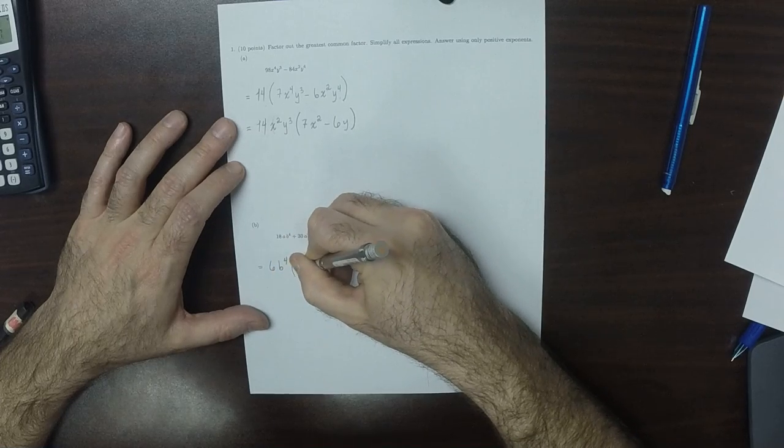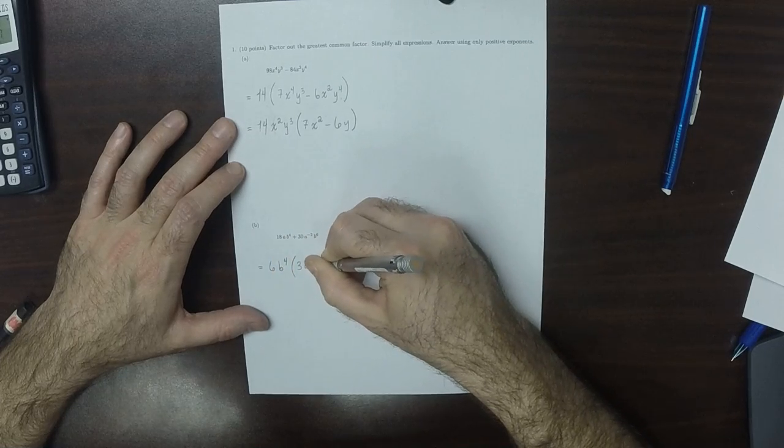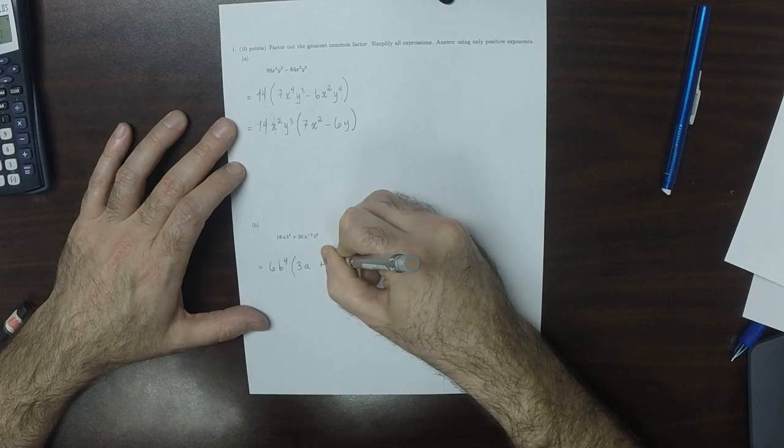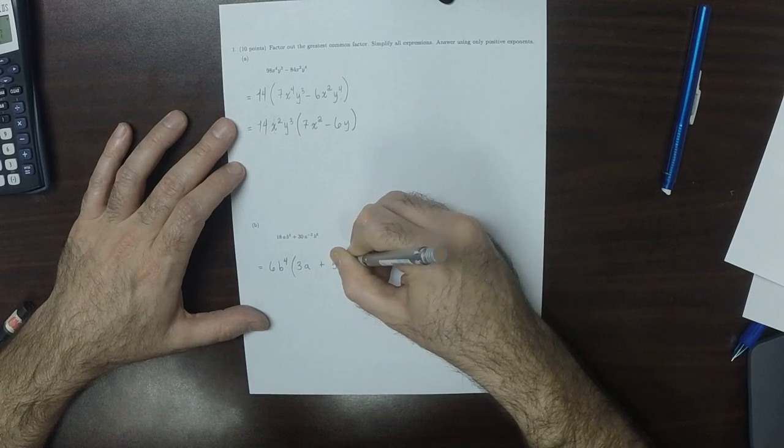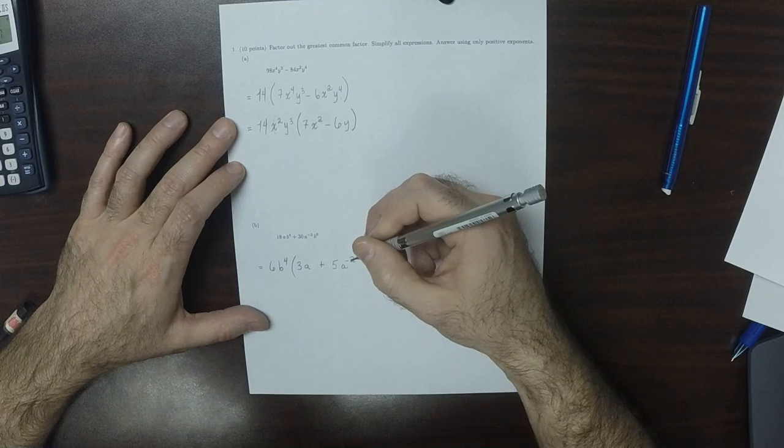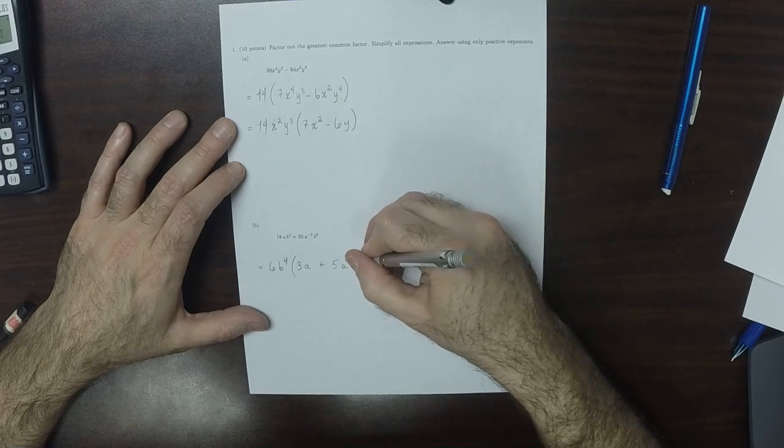And that would be 3a plus 5a to negative 2b squared.